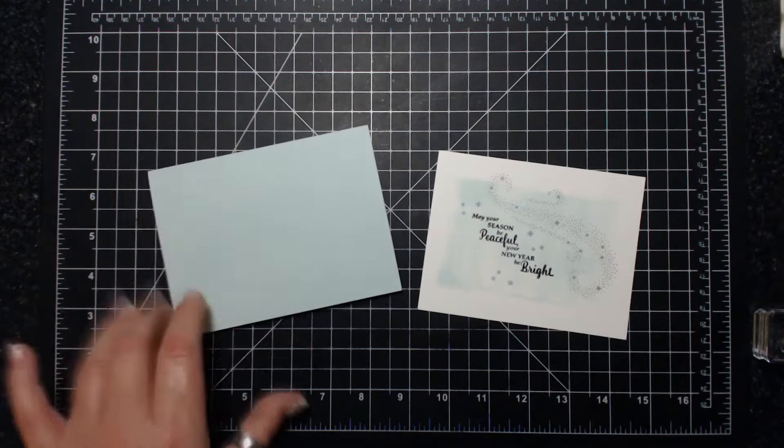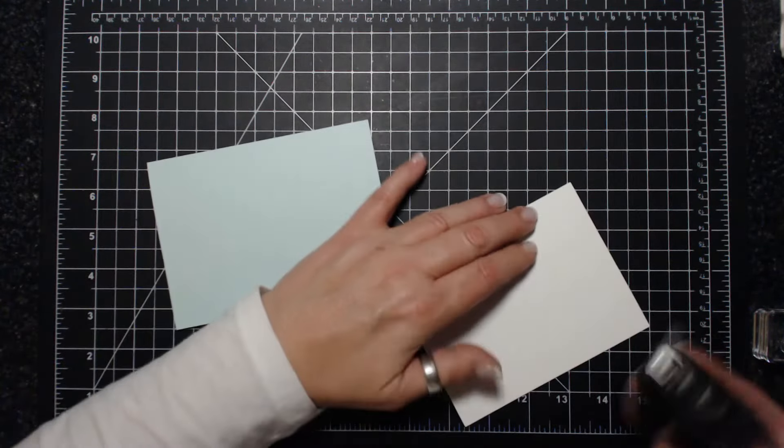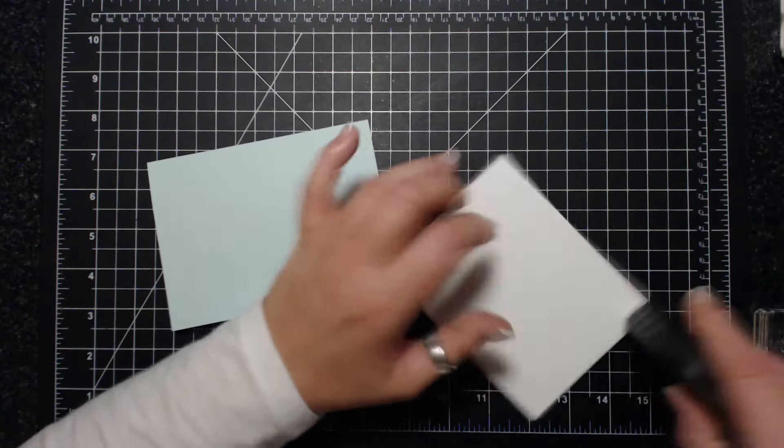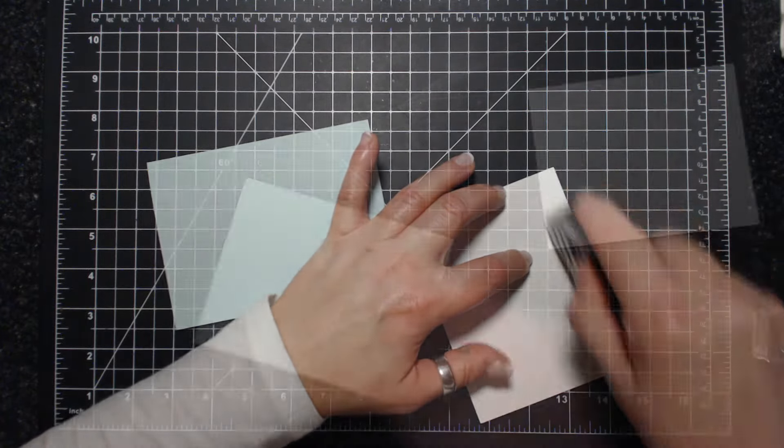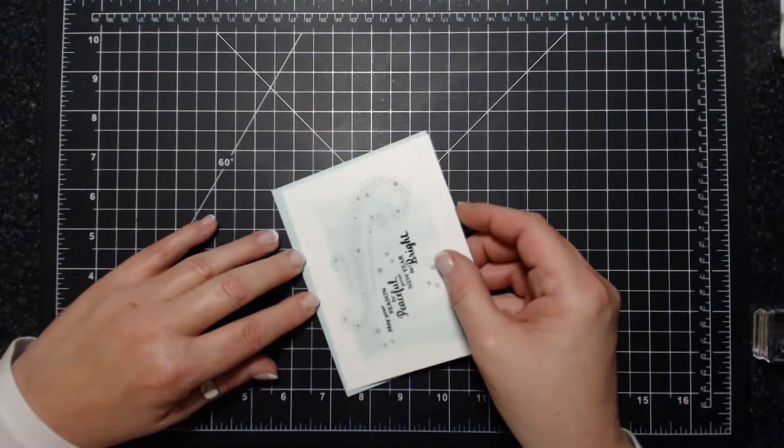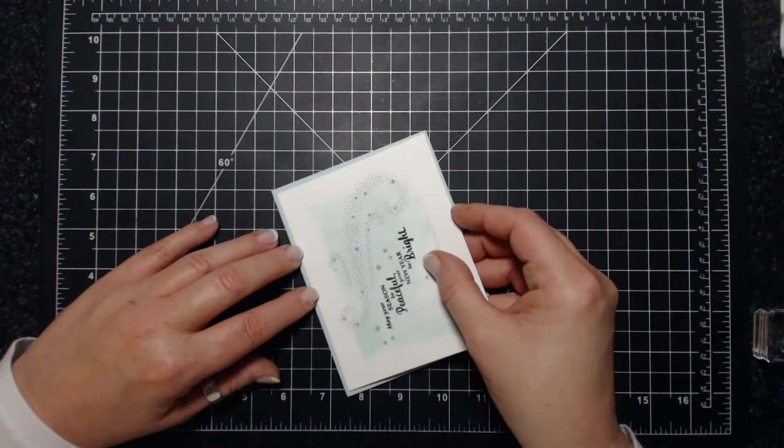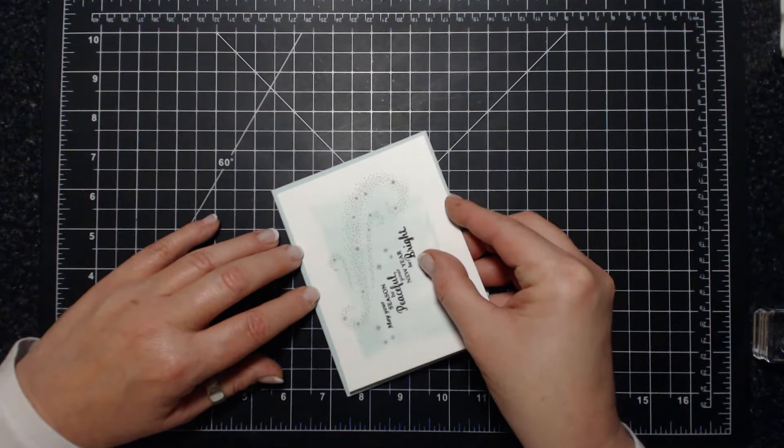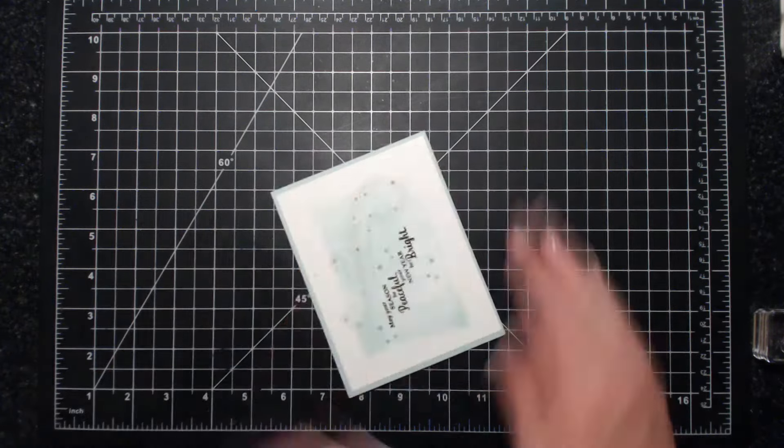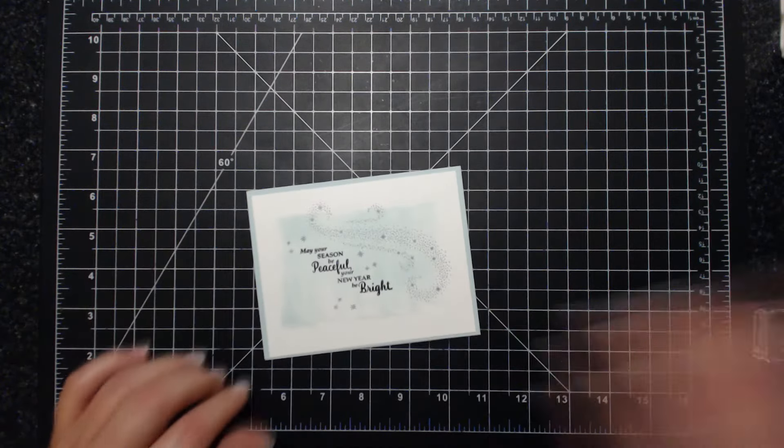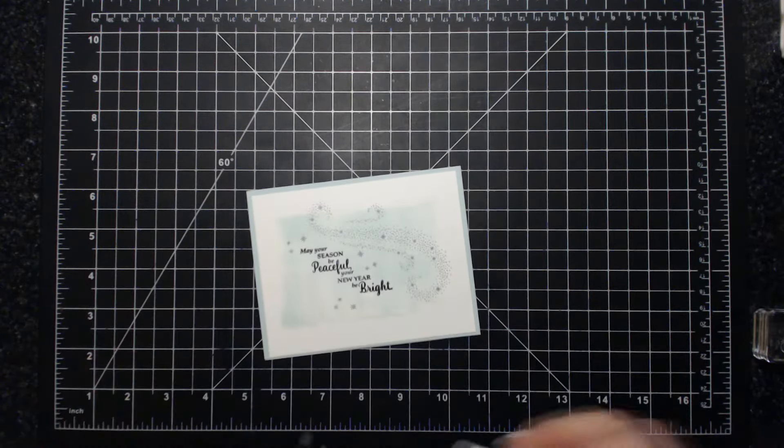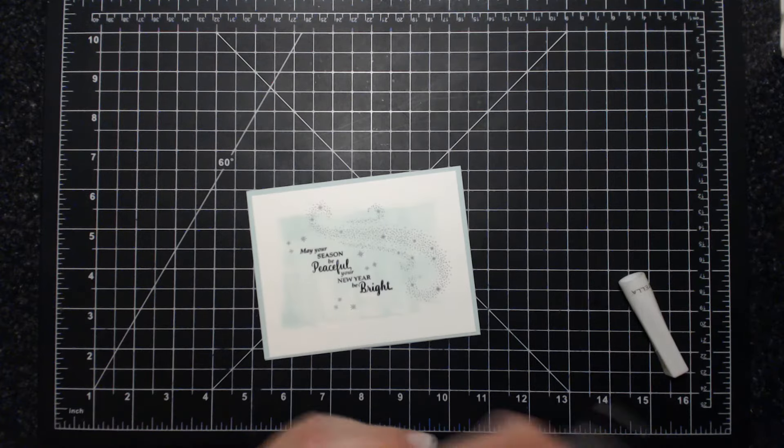I noticed that my star swoosh here had a little divot in the center, but by using the piercing mat I was able to get a nice clear impression.